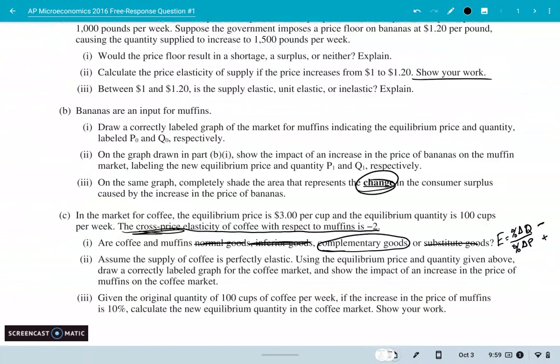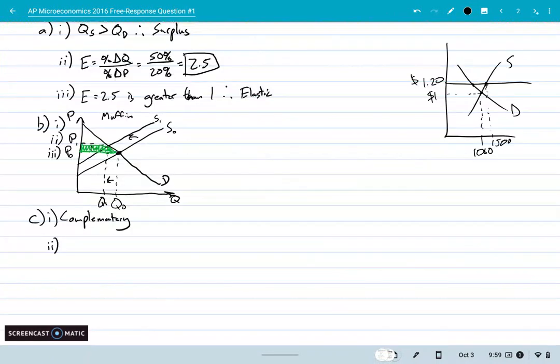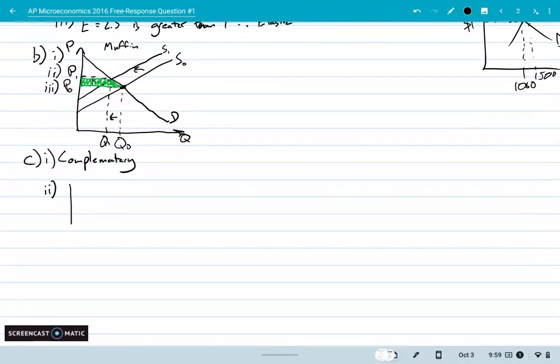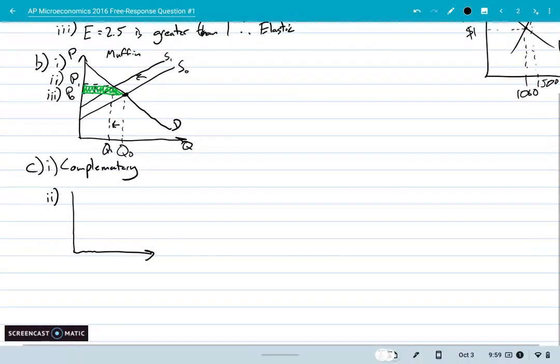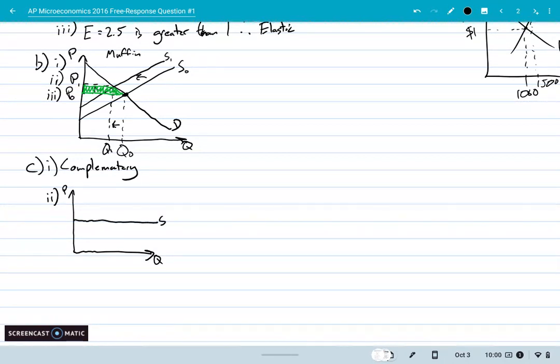Now, assume the supply of coffee is perfectly elastic. Show the equilibrium price and quantity given above, so $3 and 100 cups, and draw a correctly labeled graph. So this is kind of like problem B. Make sure, again, that of course you label your axes. Here's the trick. We have perfectly elastic supply, which means we have that horizontal supply curve. Perfectly inelastic would be a vertical line, and that must be at $3. And then demand, we'll just assume, is downward sloping like normal. And that's at $3, and that was at 100 cups of coffee. I think that's all I needed to do on that, so I'm going to jump ahead to number three here.